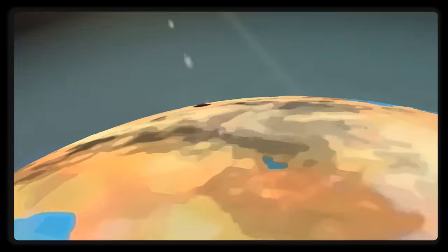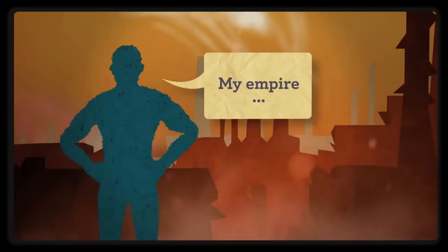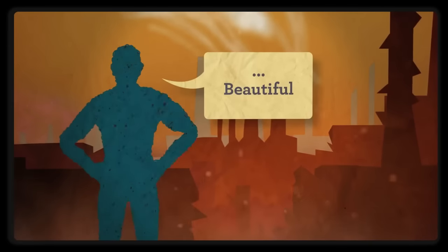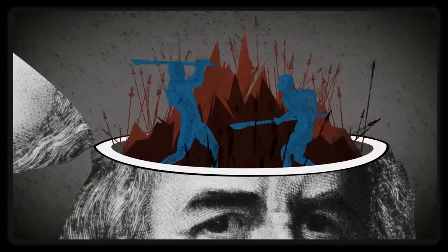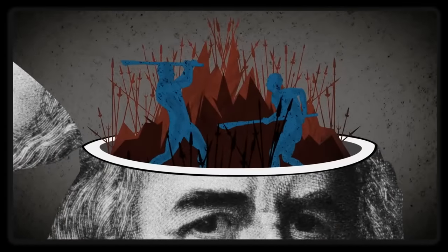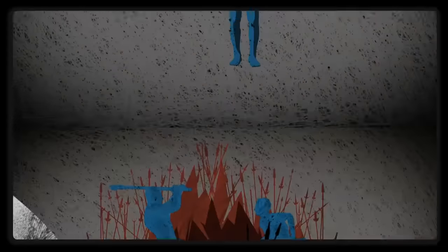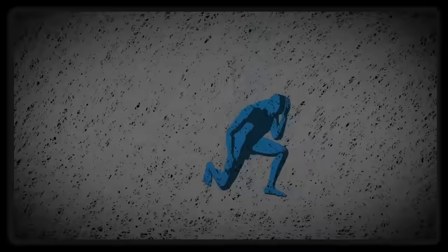How we see the world determines how we act. The Western philosopher Hobbes saw humans as engaged in a war with each other over resources, making our lives solitary, poor, nasty, brutish, and short.